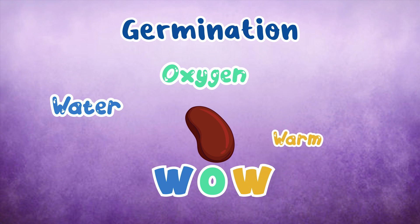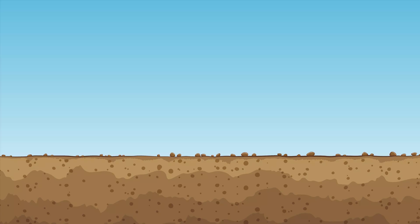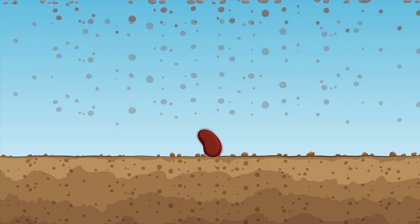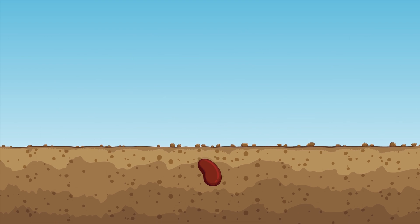WOW means water, oxygen, and warmth. Tiny seed in soil and rinse. Life has an ache and innocence. Sun and rain are in peace. Journey starts in the moment of bliss.